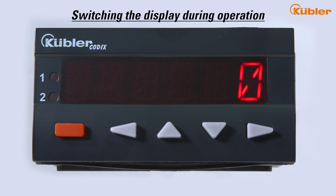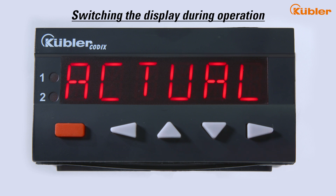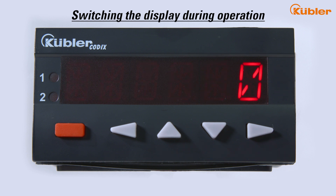By pressing the up or down keys once during operation, the currently selected display function appears in the display for two seconds. If the up or down keys are pressed a second time within these two seconds, the display switches to the next or previous display function.